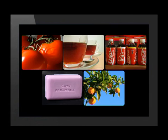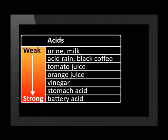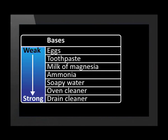There are many examples of acids and bases in our everyday lives. Substances such as coffee, tomato juice, and citrus fruit juices are acidic. Some of these acids are classified as weak acids and others as strong acids. Substances such as drain cleaners, soaps, and toothpaste are basic.